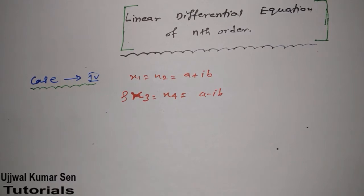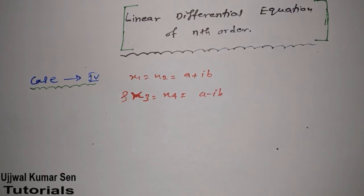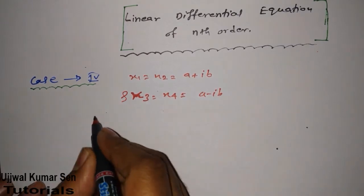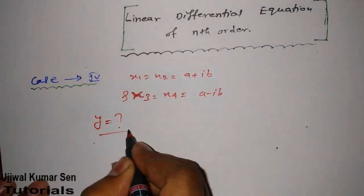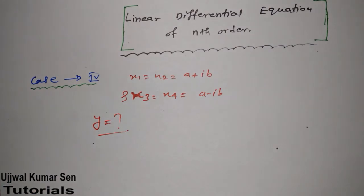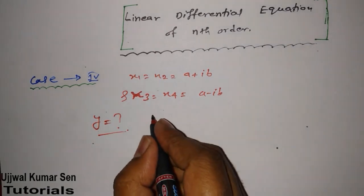If we are getting two pairs of imaginary roots — for example, x1 = x2 = a + iota*b and x3 = x4 = a − iota*b — then how can we find out the general solution? What would be the formula for finding y when we are given this condition?